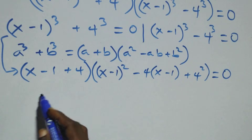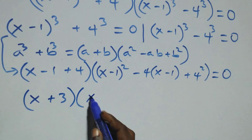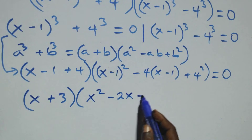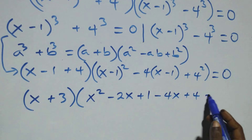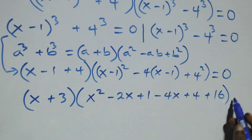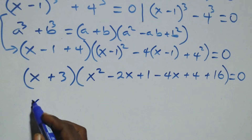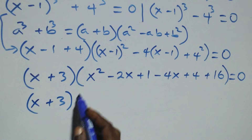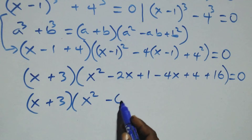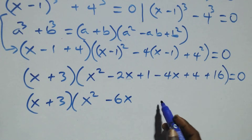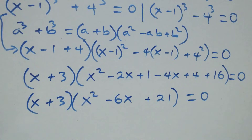That gives us (x plus 3) into the bracket. Expanding inside the bracket: x squared minus 2x plus 1, then minus 4(x minus 1) gives minus 4x plus 4, then plus 4 squared which is 16. So we have (x plus 3) times [x squared minus 2x minus 4x as minus 6x, then 4 plus 16 plus 1 equals plus 21] close bracket equals to 0.